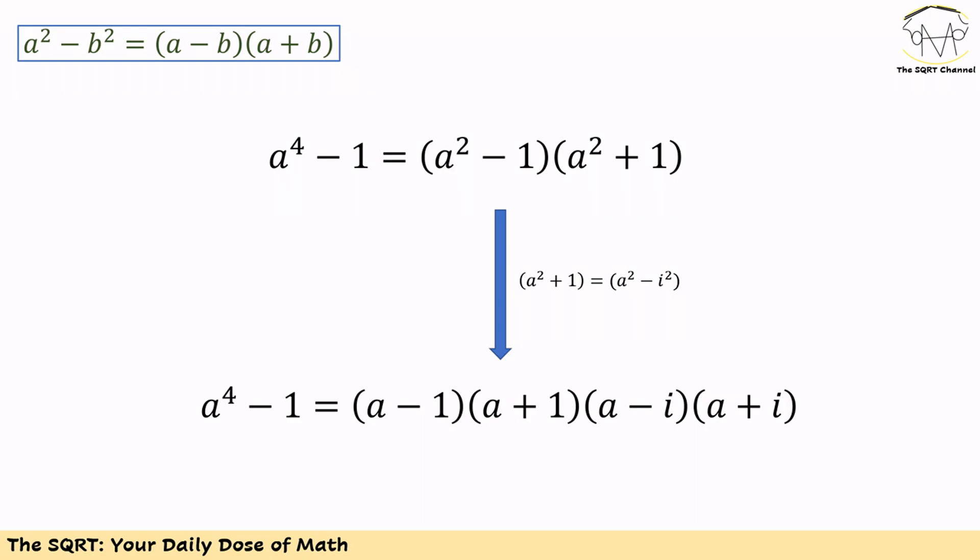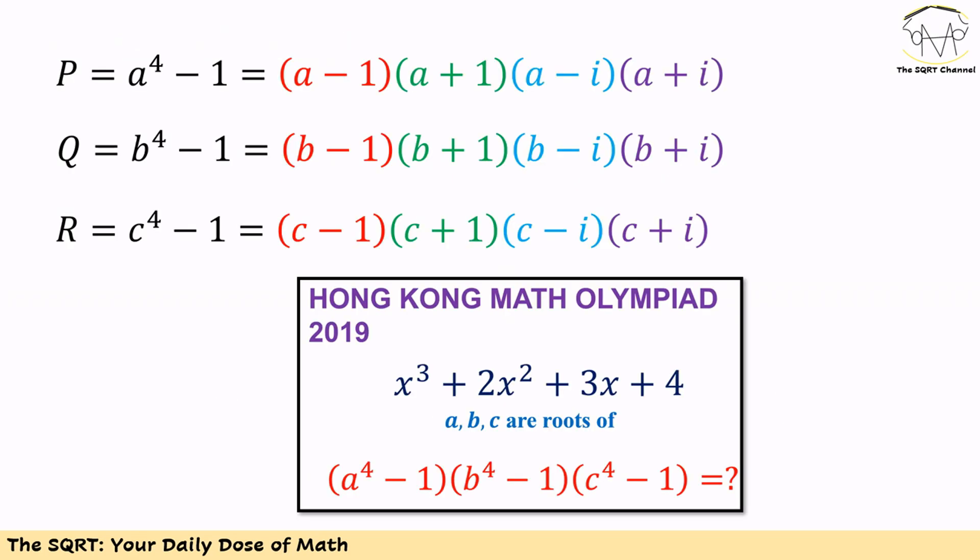We can also simplify a squared plus 1 and write it as (a minus i)(a plus i), remembering that i squared is equal to minus 1. Now let's use the same approach for b to the power of 4 minus 1 and c to the power of 4 minus 1.